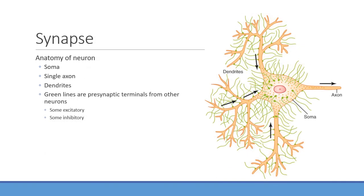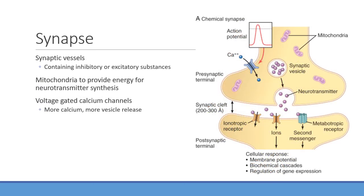At the synapse, we have the soma (cell body), a single axon, dendrites, and presynaptic terminals from other neurons — some excitatory, some inhibitory. Synaptic vesicle release is a form of exocytosis triggered by an action potential, which causes influx of calcium through voltage-gated calcium channels. More calcium means more vesicles released and more neurotransmitter. More action potentials arriving means more calcium and more neurotransmitter release downstream.